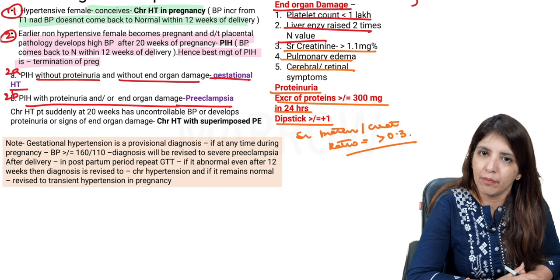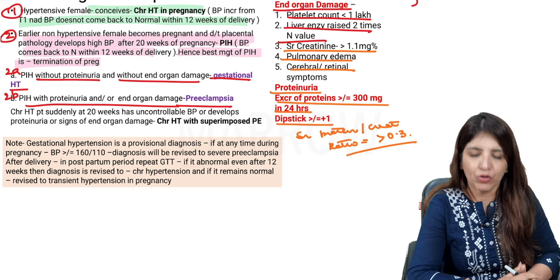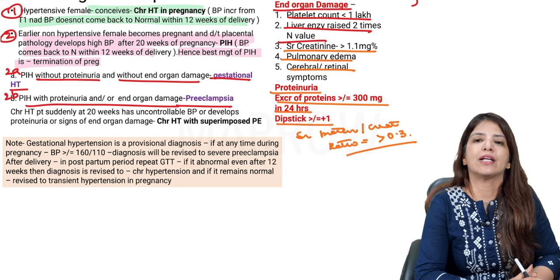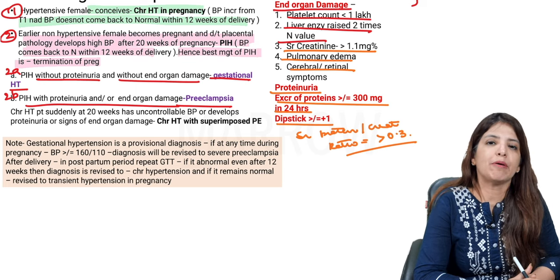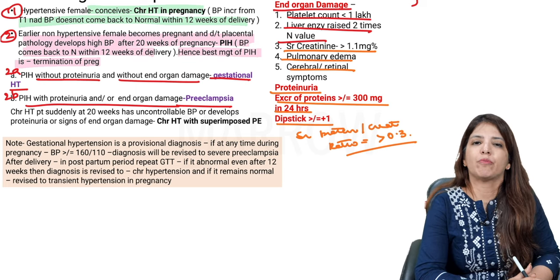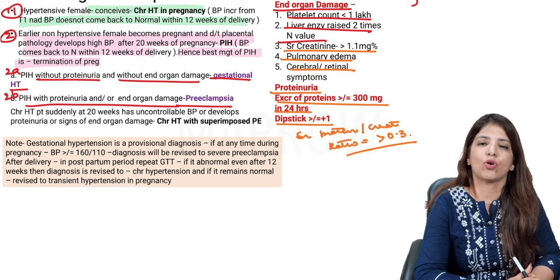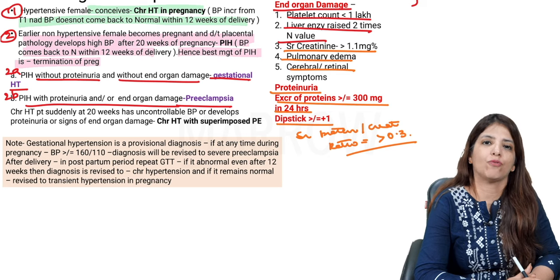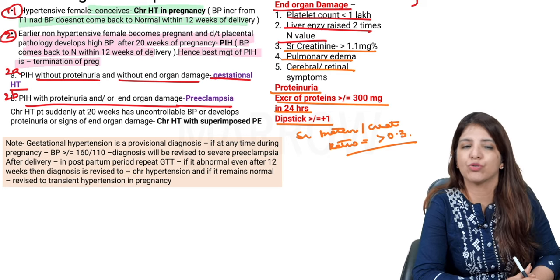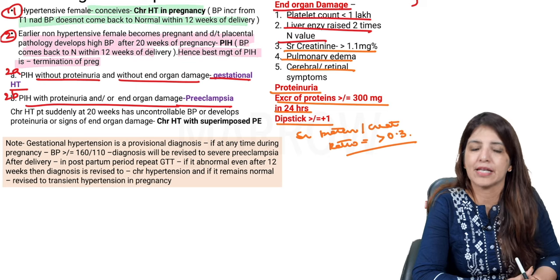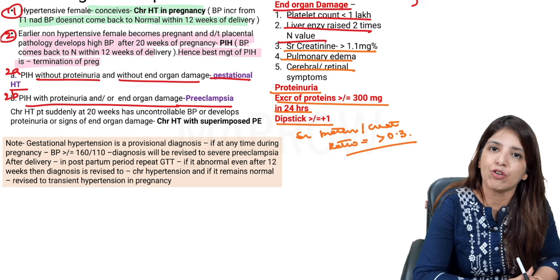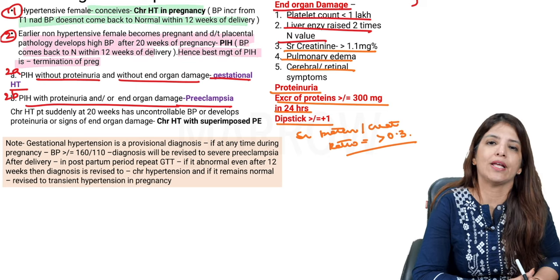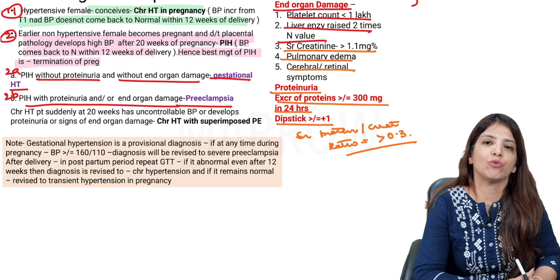When measuring BP, systolic BP is represented by Korotkoff sound 1 and diastolic BP by Korotkoff sound 5, which is disappearance of sounds — this is in pregnancy. In a non-pregnant female, diastolic is represented by Korotkoff sound 4, which is muffling of sounds.